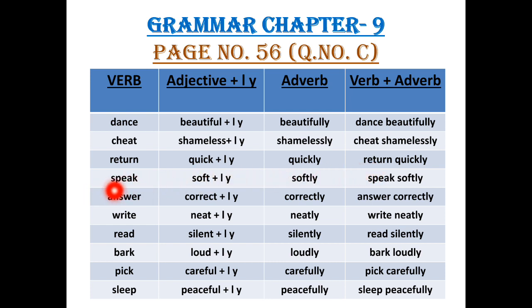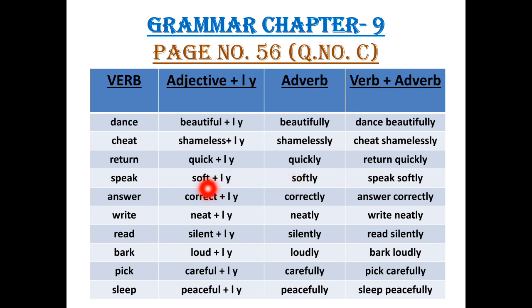The fourth one is speak, which is a verb. Then soft, which is an adjective. And when we will add L-Y to the word soft, it will become softly, which is an adverb. So children, adverbs are usually formed by adding L-Y to adjectives — here you can see softly. In the fourth column, when we add verb with adverb, it will become speak softly.